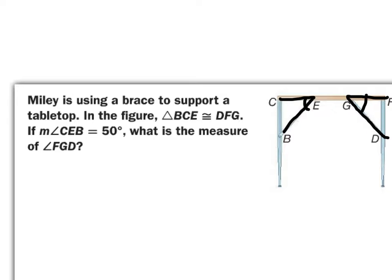As it turns out, we can see that this is a 90-degree angle here, and so CEB and FGD are corresponding angles in both triangles. Therefore, angle FGD would also be 50 degrees.